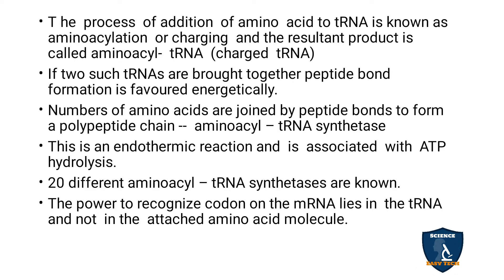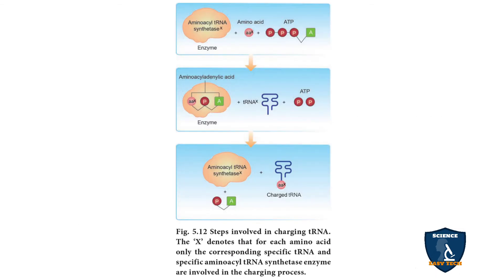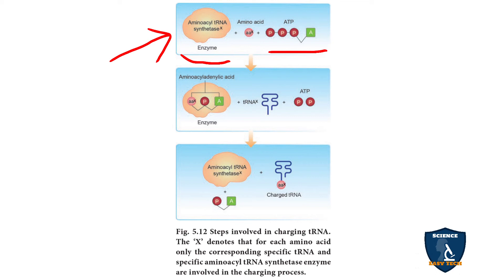The process of adding an amino acid to tRNA is called amino acylation, and it is carried out by the enzyme aminoacyl-tRNA synthetase. During this process, ATP and adenylic acid are also added to provide the energy needed to carry the amino acid to the site of protein synthesis.